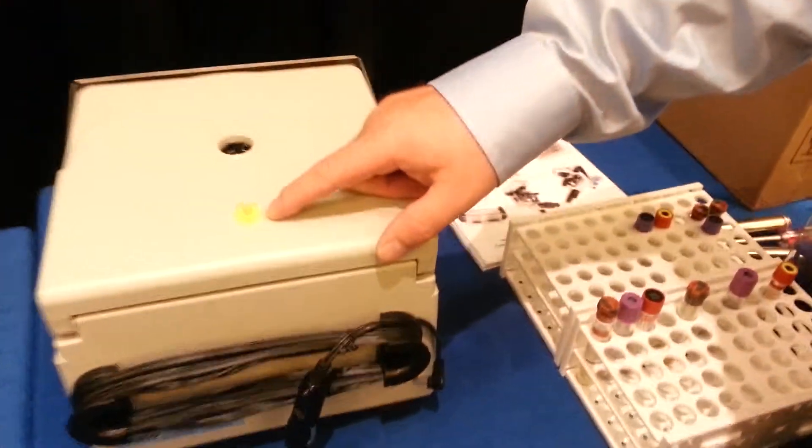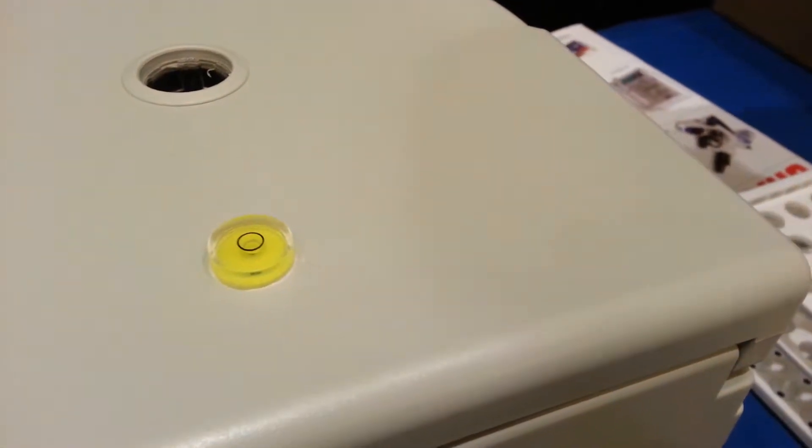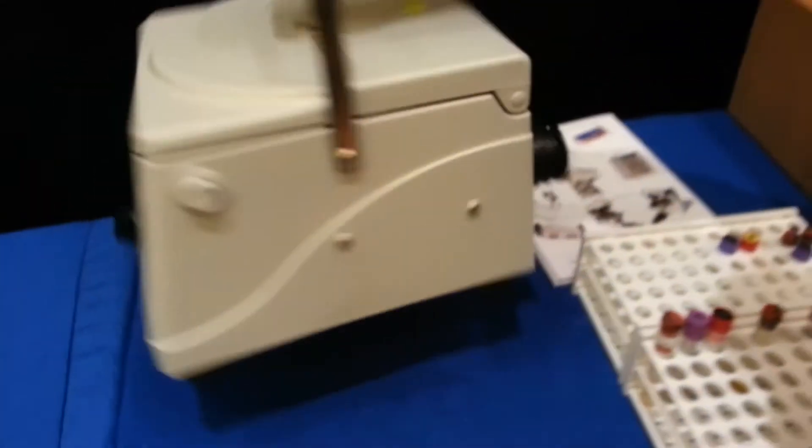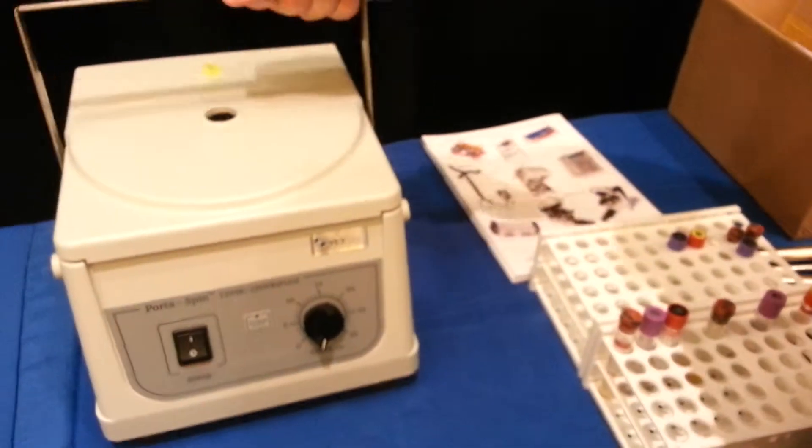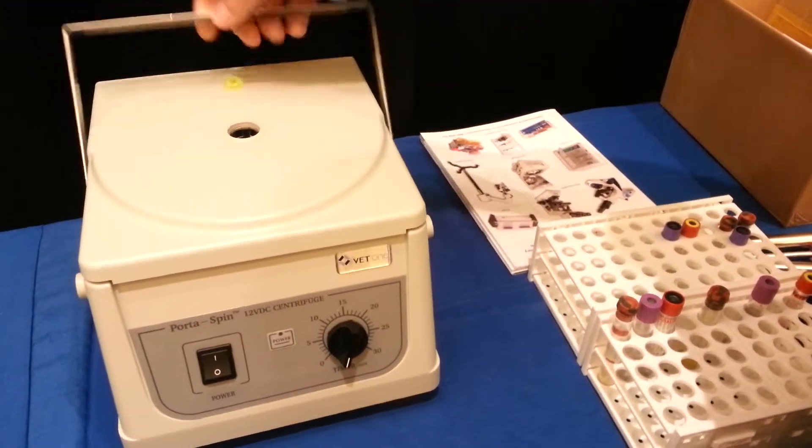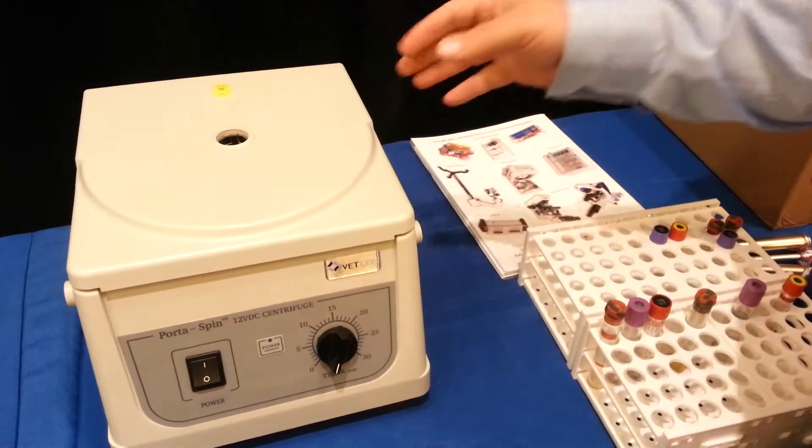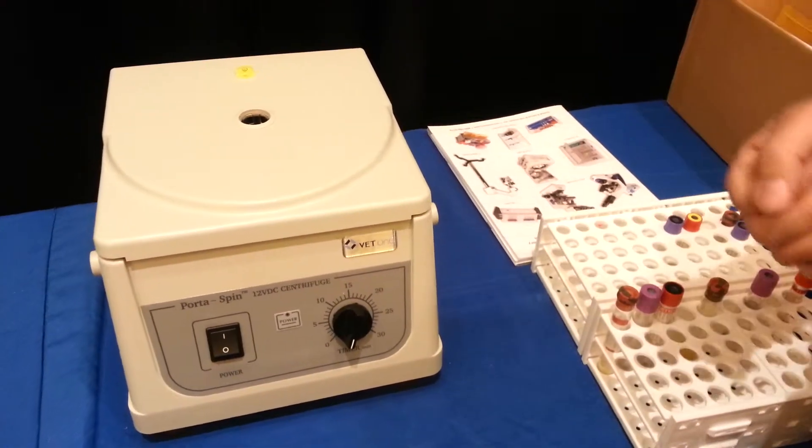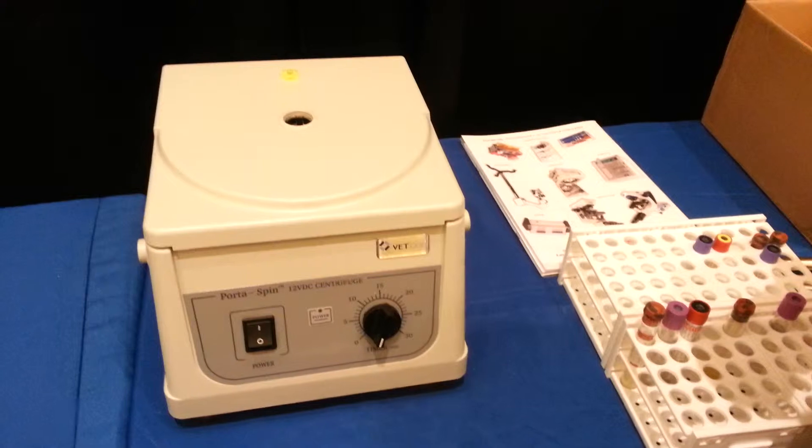On the top here, we've got a fisheye level to make sure you're level before you start spinning, or as close to level as you can get. Very lightweight, as you can tell. Great for mobile vets. They can get their samples spun down before they get back to their practice.